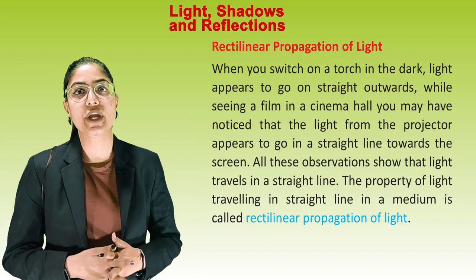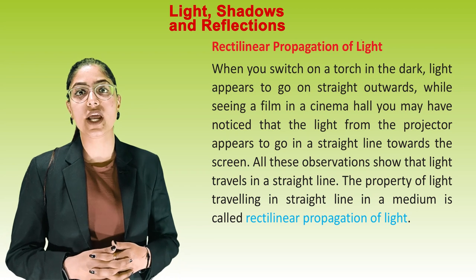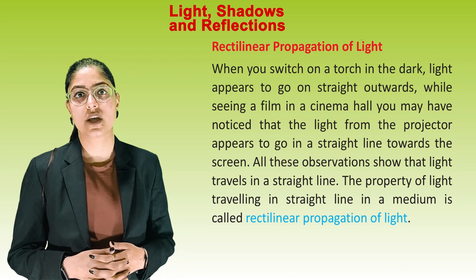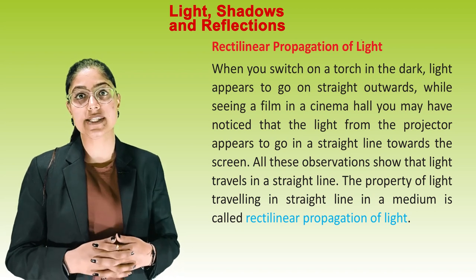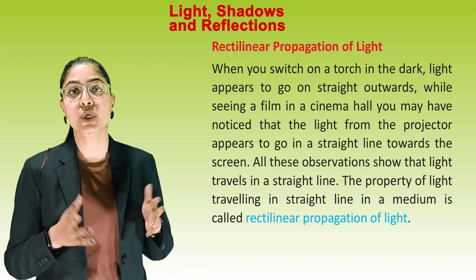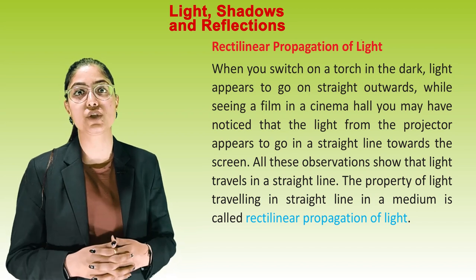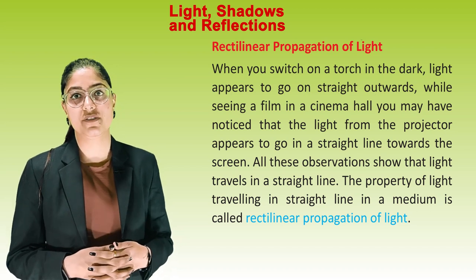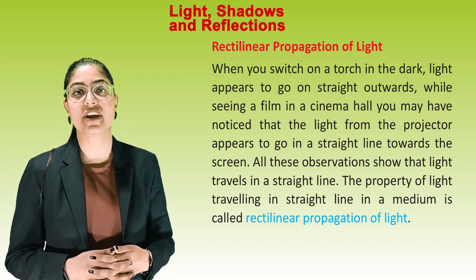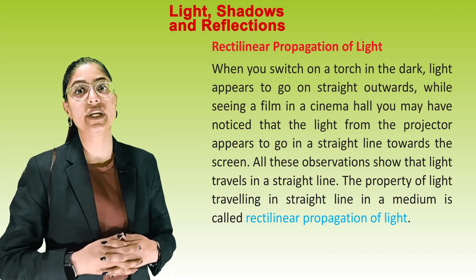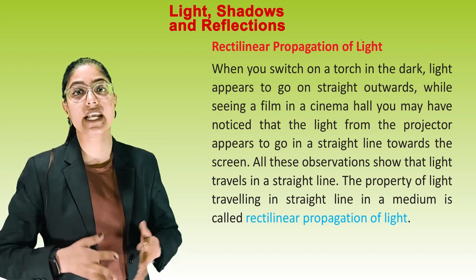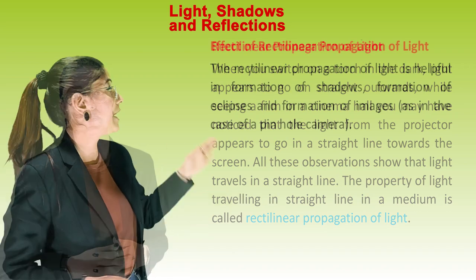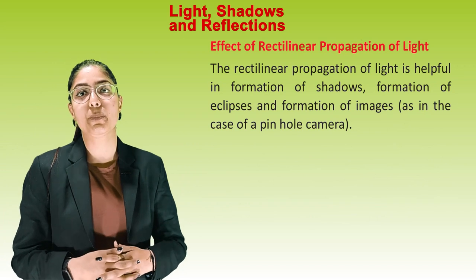Rectilinear propagation of light. When you switch on a torch in the dark, light appears to go straight outwards. While seeing a film in a cinema hall, you may have noticed that the light from the projector appears to go in a straight line towards the screen. All these observations show that light travels in a straight line. The property of light travelling in a straight line in a medium is called rectilinear propagation of light.